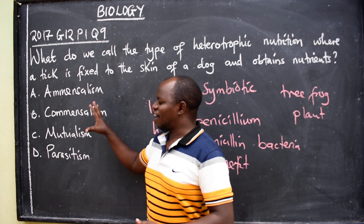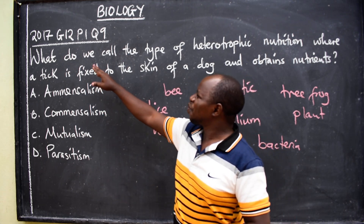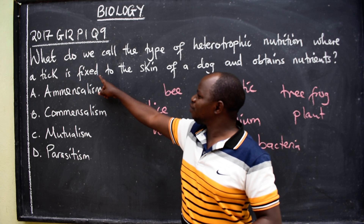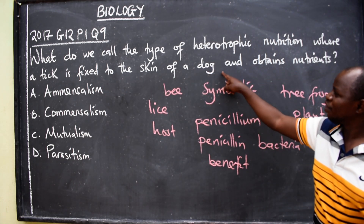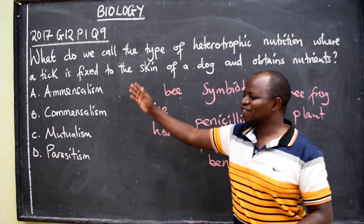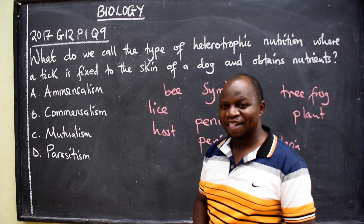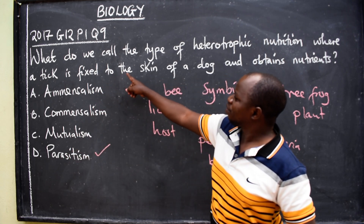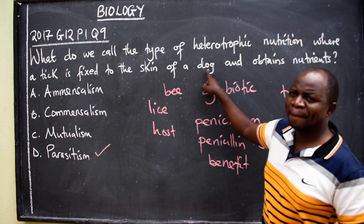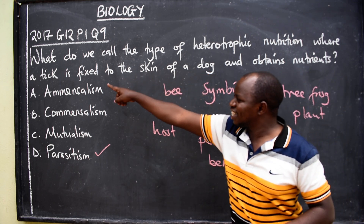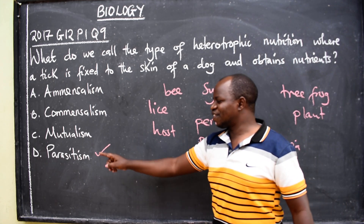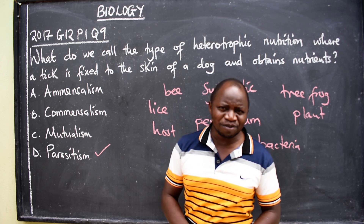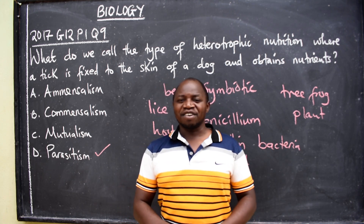Now, going back to the question: what do we call the type of heterotrophic nutrition where a tick is fixed to the skin of a dog and obtains nutrients? The correct answer is D — parasitism — because a tick is a parasite that is fixed on the skin of a dog. The dog is the host, and the tick obtains nutrients. I hope you have learned. Thank you for watching. Remember to share, subscribe to my YouTube channel, and follow me on TikTok and Facebook.